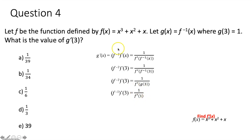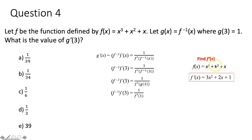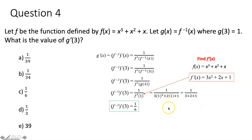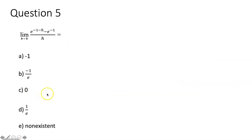To find f prime, we take the derivative of f of x using the power rule: derivative of x cubed is 3x squared, derivative of x squared is 2x, and derivative of x is 1. So f prime of x equals 3x squared plus 2x plus 1. Plugging in x equals 1: 3 plus 2 plus 1 equals 6. Therefore g prime of 3 equals 1 over 6.